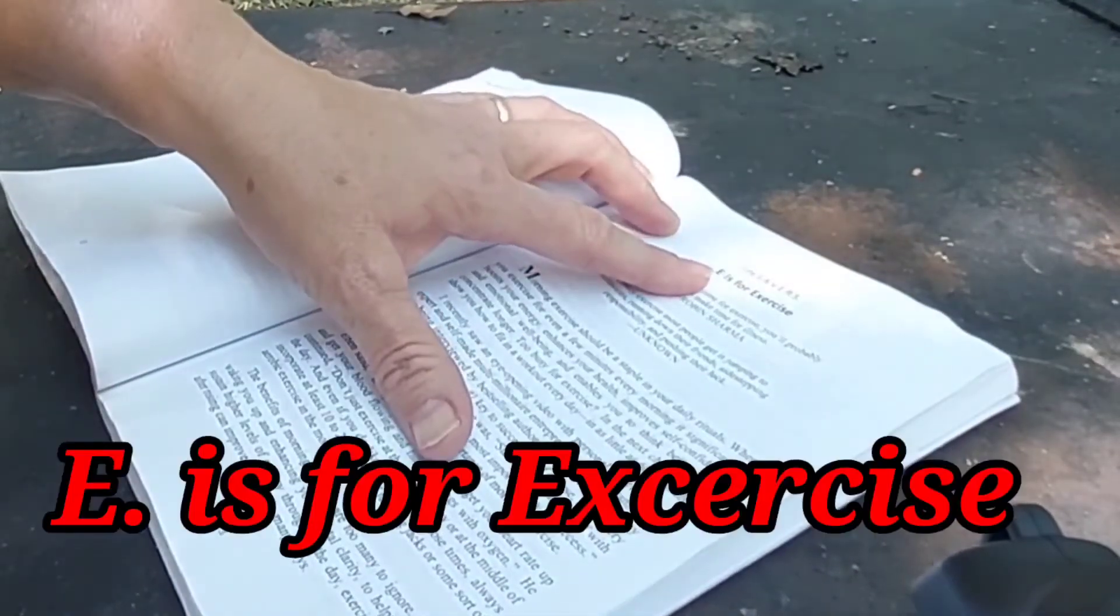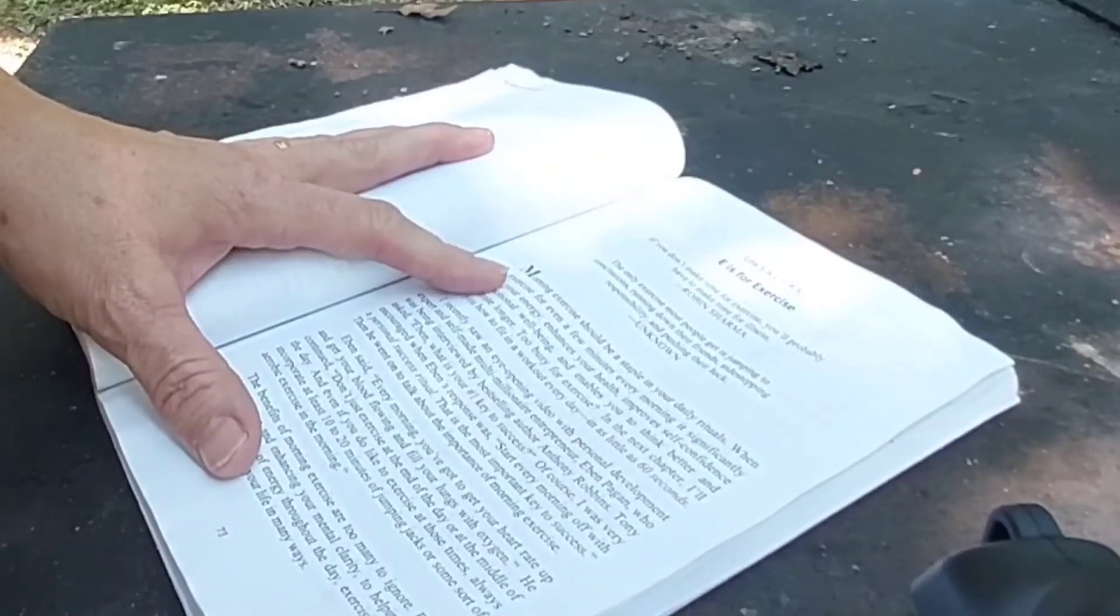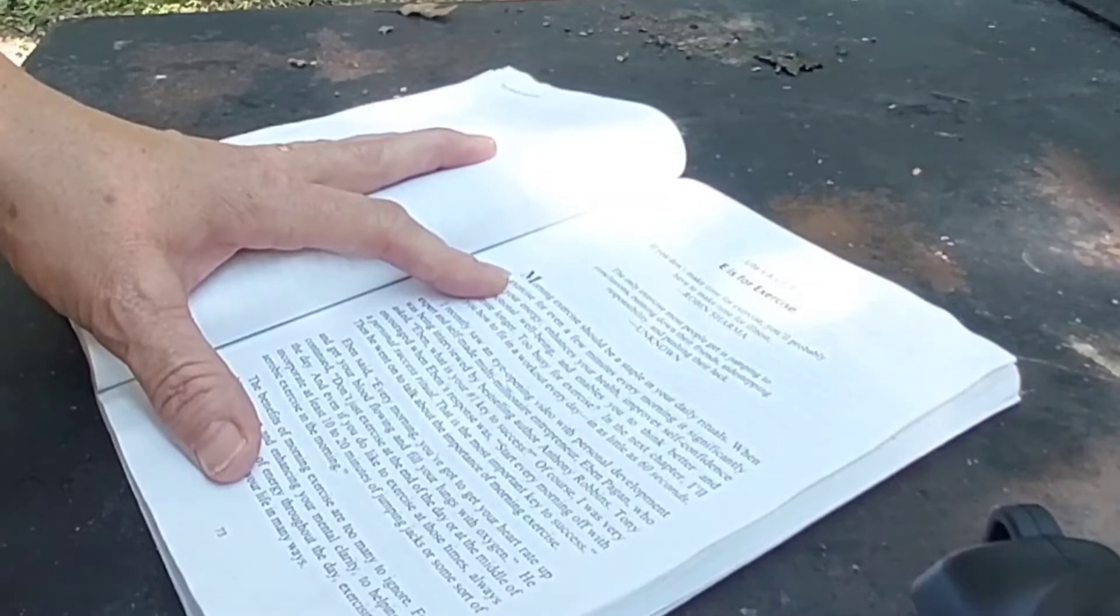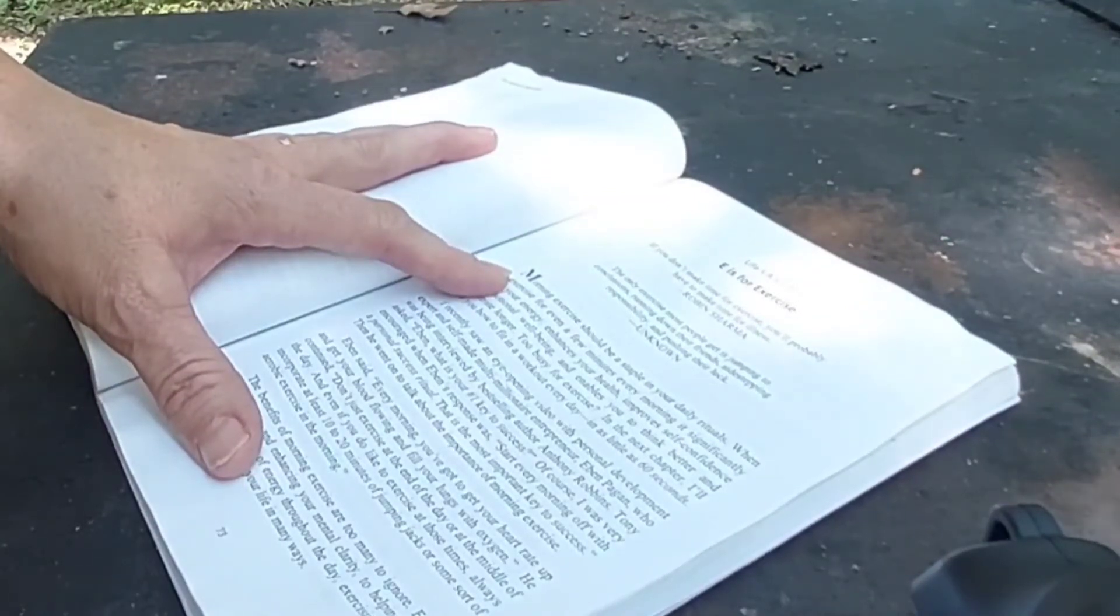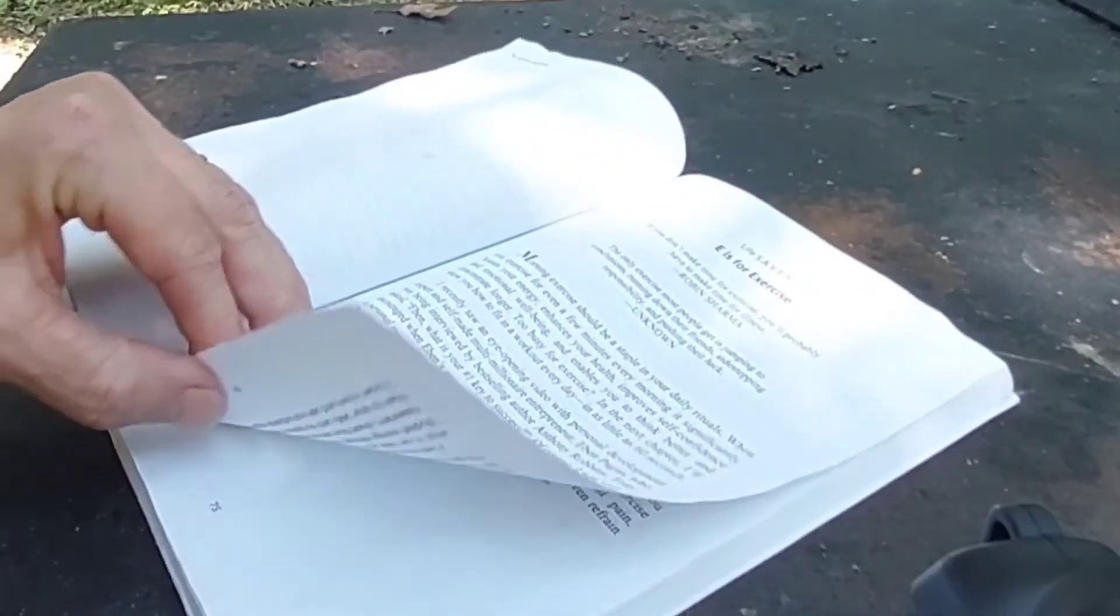The Life Savers. E is for exercise. If you don't make time for exercise, you'll probably have to make time for illness. Robin Sharma. The only exercise most people get is jumping to conclusions, running down their friends, sidestepping responsibility, and pushing their luck. Unknown.